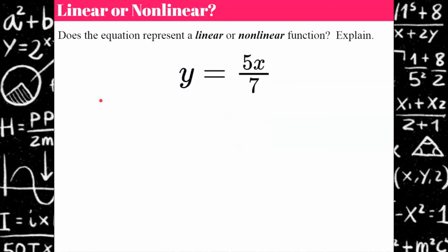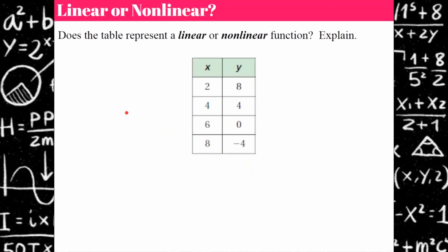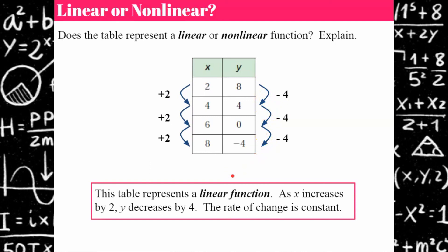Your turn — pause and come back when you're ready. Welcome back. This is a linear function because our slope is 5 over 7. Remember, 5 sevenths times x is the same as 5x over 7. So we have a slope of 5 sevenths and a y-intercept of 0. Next, looking for a constant rate of change: as x is increasing by 2, y is decreasing by 4. Therefore we have a constant rate of change, making this a linear function.